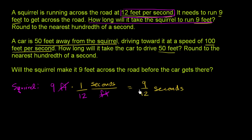And 9/12 seconds is the same thing as 3/4 seconds, which is the same thing as 0.75 seconds for the squirrel to cross the street.